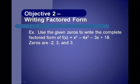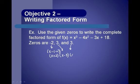Objective 2 is writing factored form. For example, use the given zeros to write the complete factored form of f of x equals x to the third minus 4x squared minus 3x plus 18, given that the zeros are negative 2, 3, and 3. If the zero is negative 2, the factor would be x minus negative 2, or x plus 2. If 3 is a zero, the factor is x minus 3. If another 3 is a zero, then x minus 3 is a factor again.